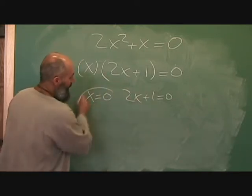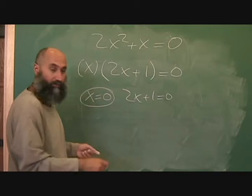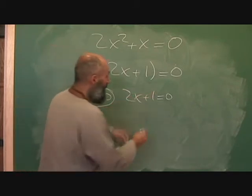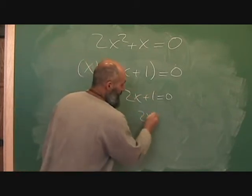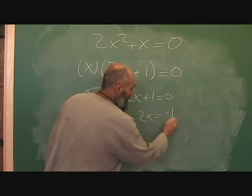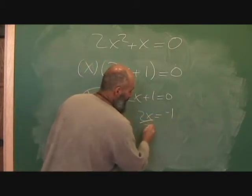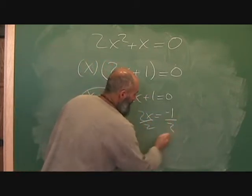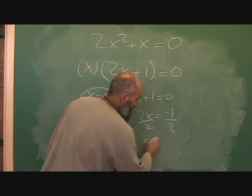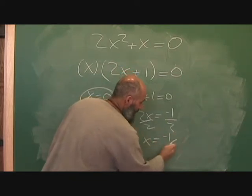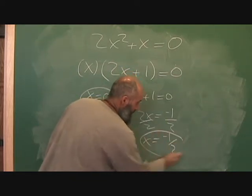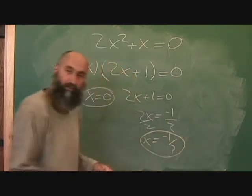This is just a straight-up answer: x equals zero. Over here, this becomes two x equals negative one, divided by two on both sides, so x equals negative one over two. That's your second solution.